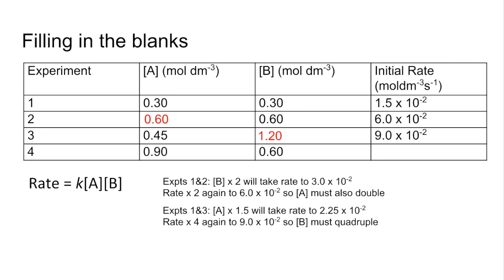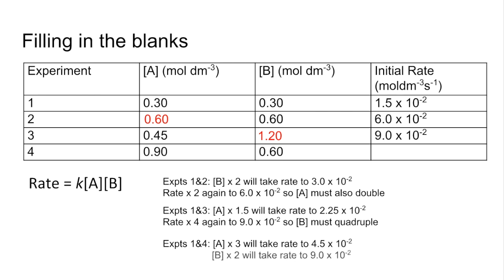For the final blank, where we calculate the initial rate, I'll use experiments 1 and 4. A has trebled — a three-fold increase — so that takes the rate up by a factor of 3 to 4.5 times 10⁻². Then B's concentration has doubled, so that 4.5 times 10⁻² doubles again, giving 9 times 10⁻². Alternatively, you could look at the overall change: A has trebled and B has doubled — an overall factor of 6 — so the rate also increases by a factor of 6, which it does.